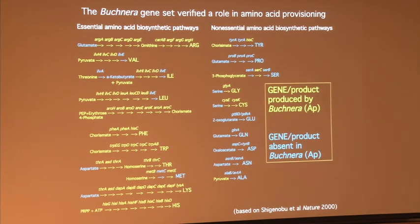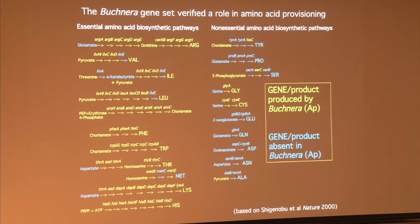In 2000, the Buchnera genome was sequenced by a group in Japan, and all of that work basically verified that Buchnera has a gene set highly modified in a way that would support amino acid biosynthesis for the aphid. From this genome paper, the essential amino acid pathways are largely intact — those yellow steps have a gene in the Buchnera genome — whereas the non-essential amino acid pathways, which are redundant with the insect host, are largely lost.